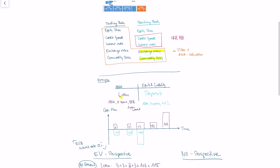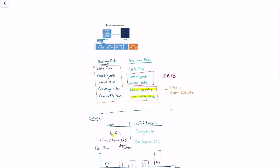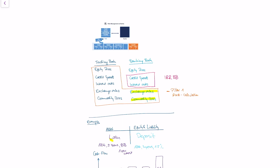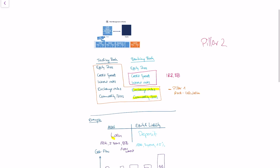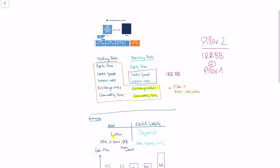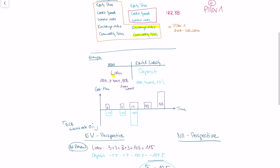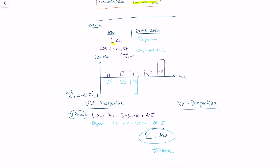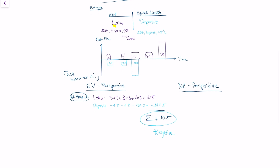To recap: with interest rate risk in the banking book, we're looking at Pillar 2 market risk management. Pillar 2 tries to assess what different interest rates mean for assets in the banking book — this is what IRRBB is all about. IRRBB has two different perspectives which consider two different problems. The expected value perspective tells you what the value of your portfolio is right now.